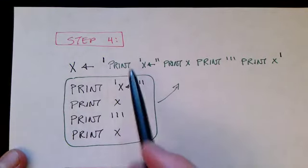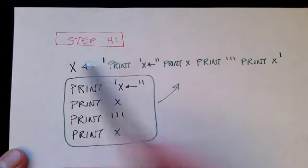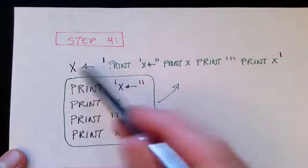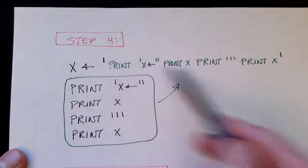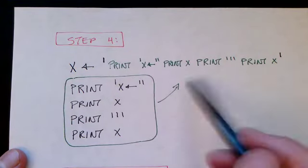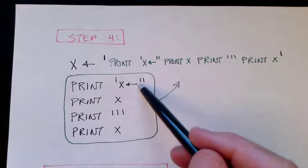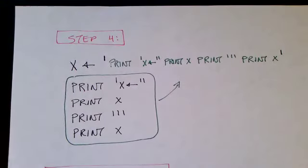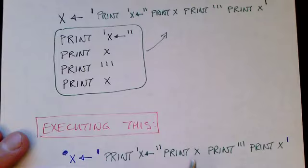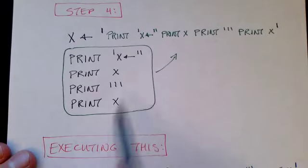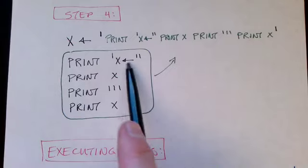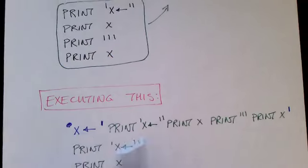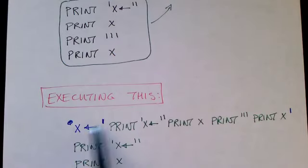Now, let's try executing this thing. So, we're going to execute it. The first thing we do is we do the assignment statement. There's no output for that, but x is now assigned to this string. The next thing is we execute the first print statement, which says x gets quote. And so, we print out in blue, x gets quote.